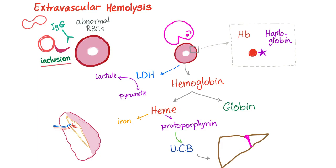Or there may be inclusion bodies — for example, Heinz bodies present in G6PD deficiency. Those are inclusion bodies that must be eradicated. The red blood cell gets phagocytosed in the spleen by the splenic macrophages.